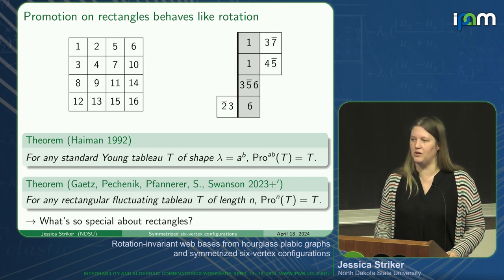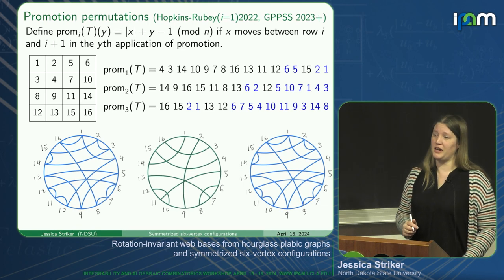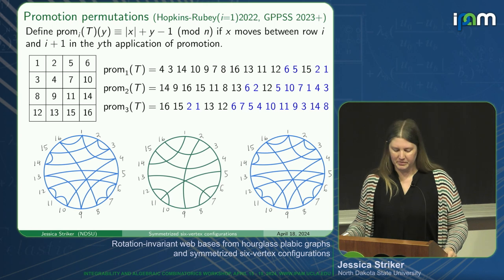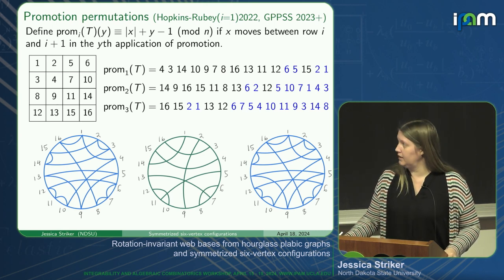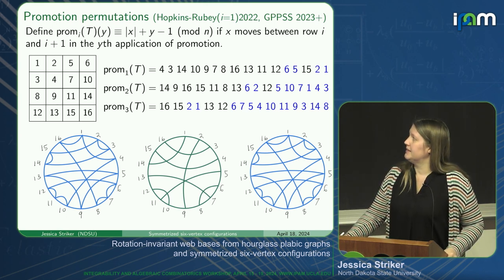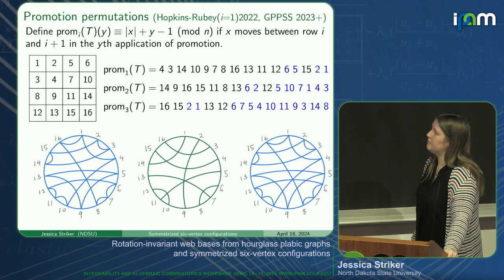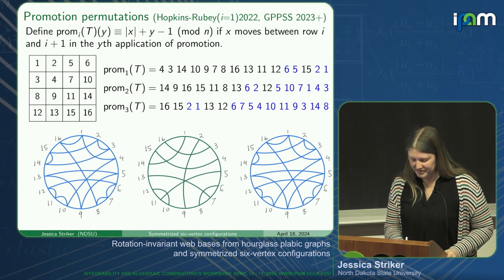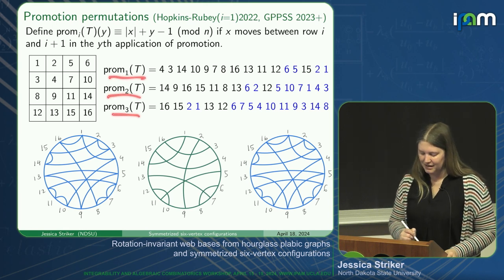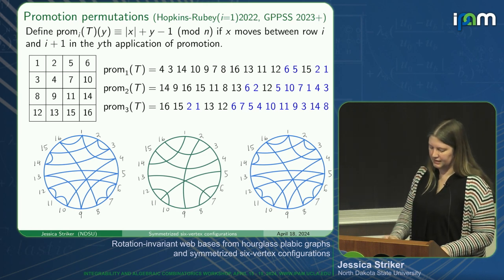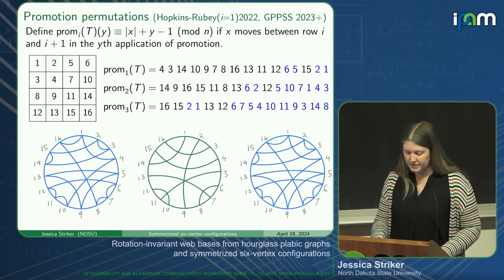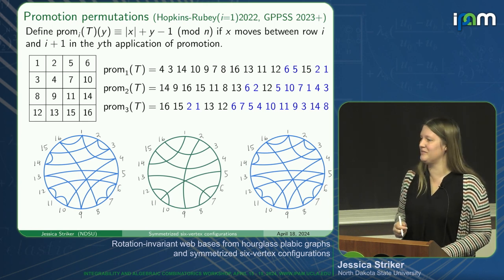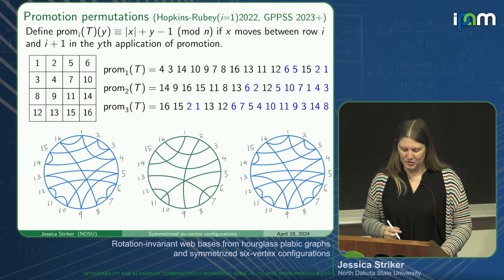What's special about rectangles? One thing is they have promotion permutations. These are new objects associated to tableau, defined by Hopkins and Rhoades in 2022, and then we expanded on what they did by defining more of them. They defined the first one and we defined R minus one of them for an R-row rectangular tableau. The reason I went through the whole promotion process is it helps me tell you how to write down these permutations.